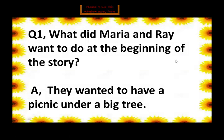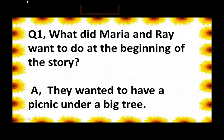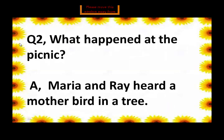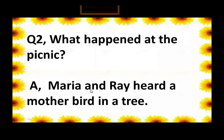Now let's come to question and answers. Question number one: what did Maria and Ray want to do at the beginning of the story? Answer: they wanted to have a picnic under a big tree. Question number two: what happened at the picnic? Answer: Maria and Ray heard a mother bird making noise in a tree.